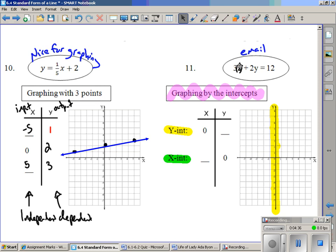If I put a 0 in here, 3 times 0 is 0. 0 plus 2y just basically leaves us with this equation. 2y equals 12. So 2 times something is 12. 2 times 6. When x is 0, y is 6. And we get a point, 0, 6.